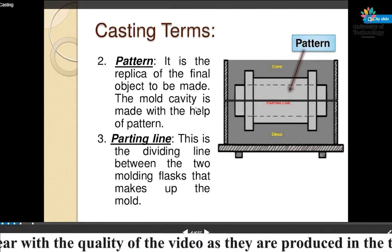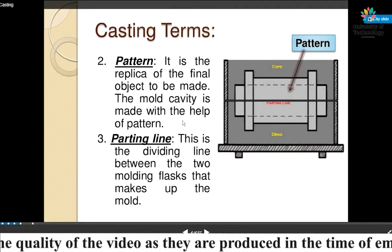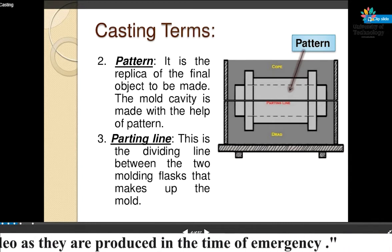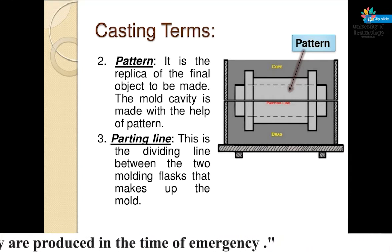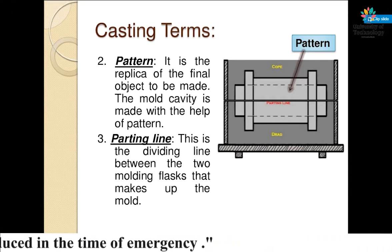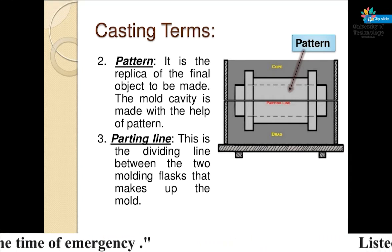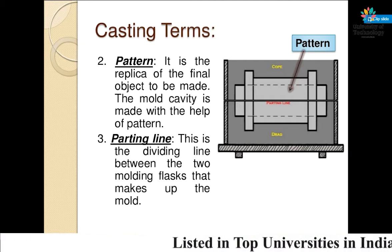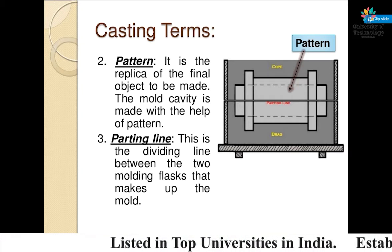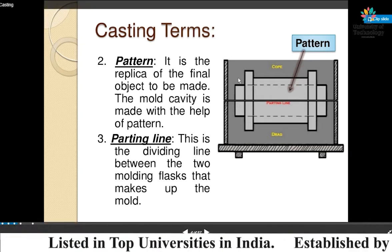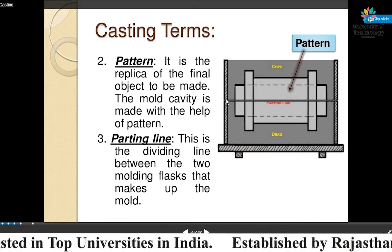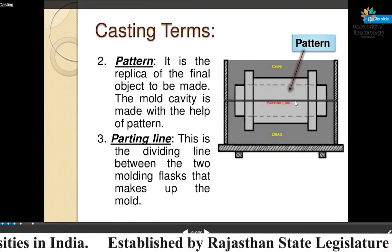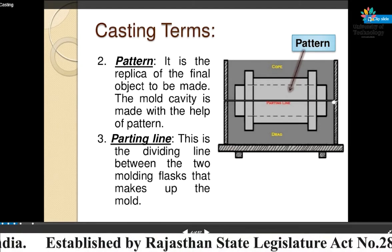Parting line — this is the dividing line between the two molding flasks that make up the mold. We can see the parting line in the figure.